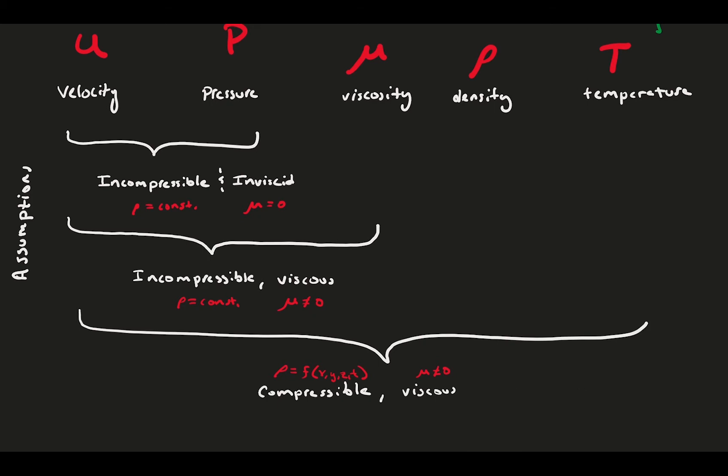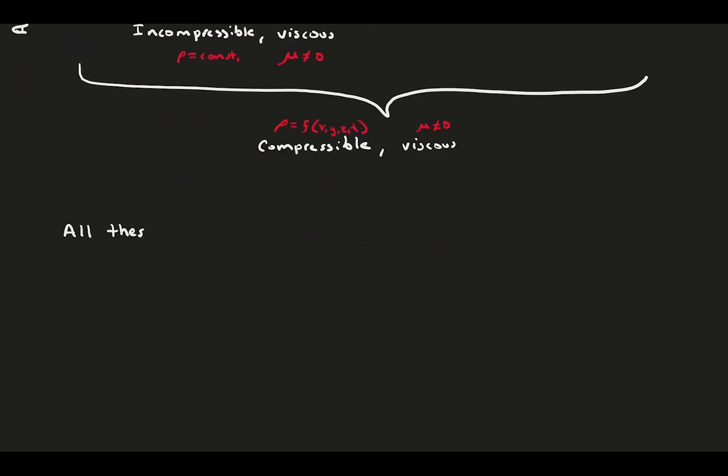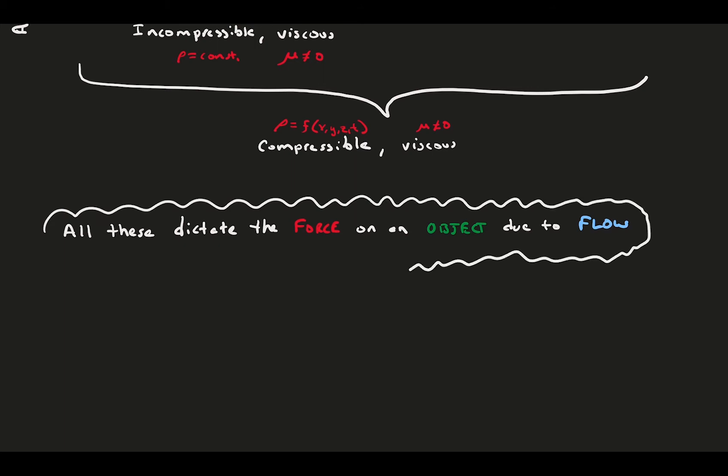All of these variables represent a physical source of force on an object in a flow. Naturally, you might ask, sure, these are just variables that appear in equations, but what physically are they? What do they mean? How do they work?